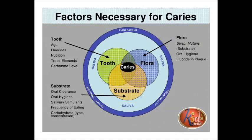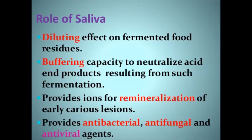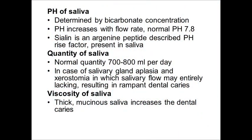Each of these theories fails to explain all ramifications of the disease, but all new theories agree on the factors necessary for dental caries: host, flora, and substrate. The first factor is tooth composition; morphology and position of the tooth determines caries susceptibility or caries immunity. Regarding the role of saliva, saliva has diluting, buffering, and remineralization properties, and it provides antibacterial, antifungal, and antiviral agents. The pH of saliva is determined by bicarbonate concentration. In cases of salivary gland aplasia and xerostomia, in which salivary flow may be entirely lacking, this results in rampant dental caries. Thick mucinous saliva also increases dental caries.